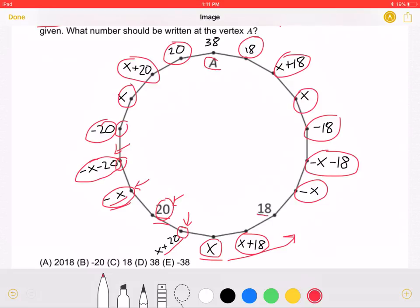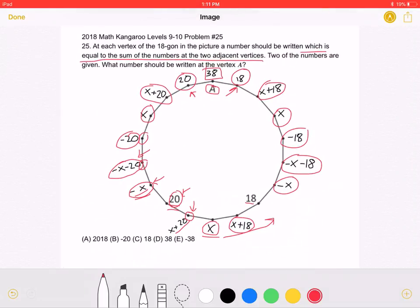Because vertex A is equal to the sum of this vertex and this vertex, we know that A must equal 20 + 18, which equals 38. This means answer choice D is correct.